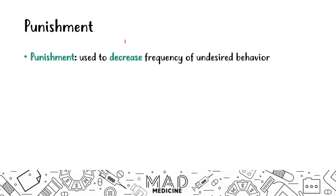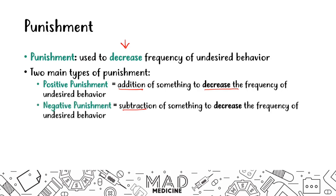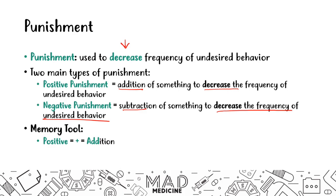Punishment, on the other hand, is used to decrease the frequency of the undesired behavior. There are also two main types of punishment. Positive punishment: you are adding something to decrease the frequency of the undesired behavior. Negative punishment: you are subtracting something to decrease the frequency of the undesired behavior. The positive/negative memory tool still applies — positive equals addition, negative equals subtraction — and punishment always means you are decreasing frequency.